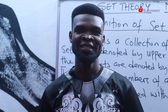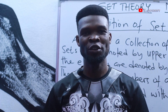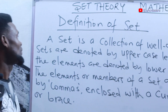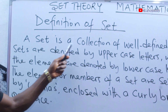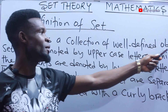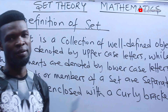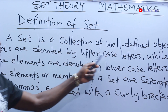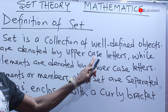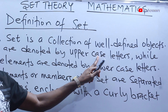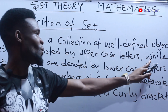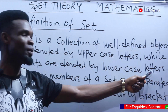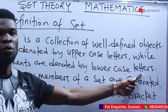Welcome back. Let's go straight to what a set is. A set is a collection of well-defined objects. Sets are denoted by uppercase letters — that is, capital letters — while the elements are denoted by lowercase letters, that is small letters.